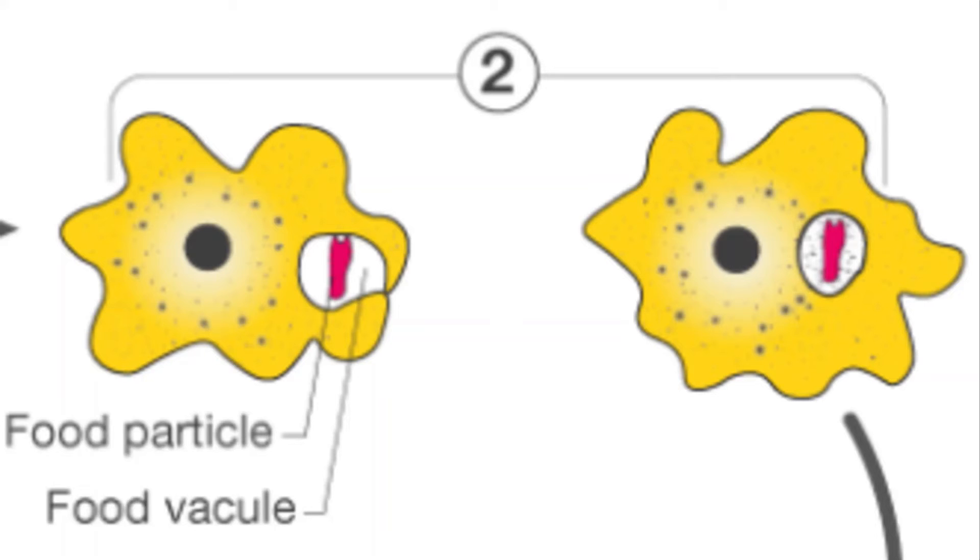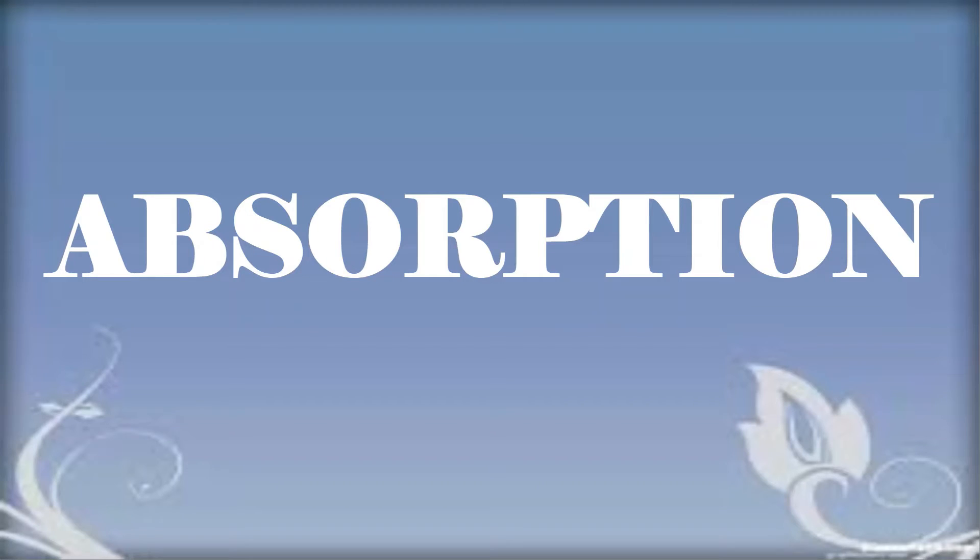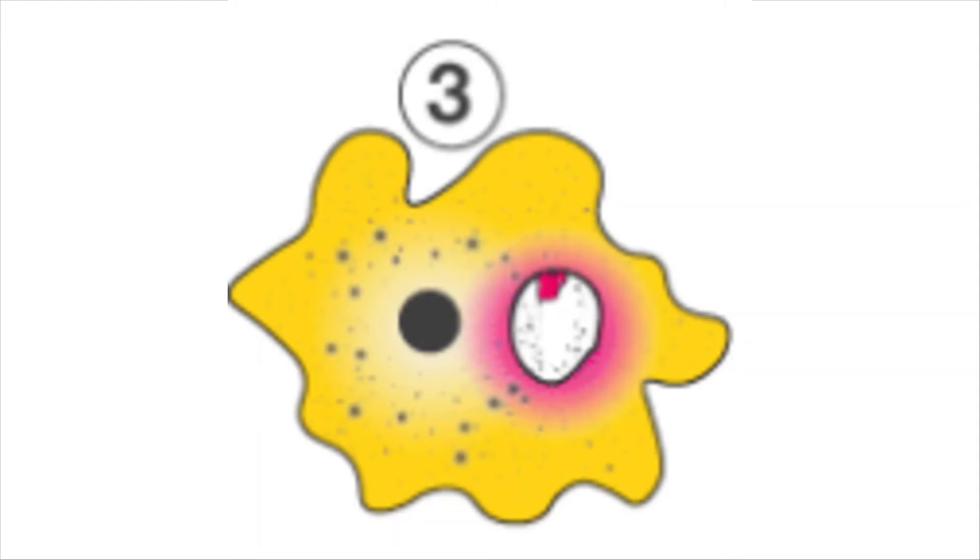Absorption: In this process of absorption, the nutrients from the digested food material are absorbed into the cell's cytoplasm by leaving behind the undigested particles. This process is called diffusion. The excess food is stored in the form of glycogen and lipids.